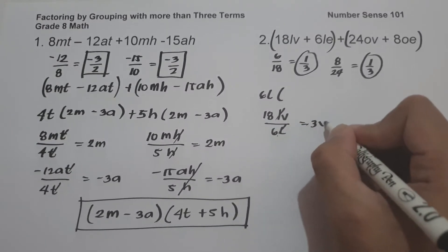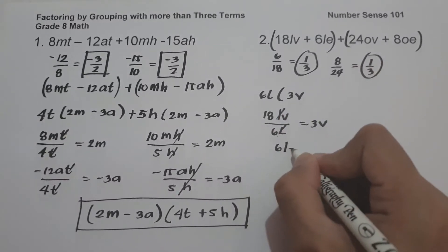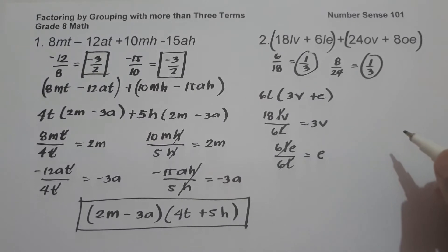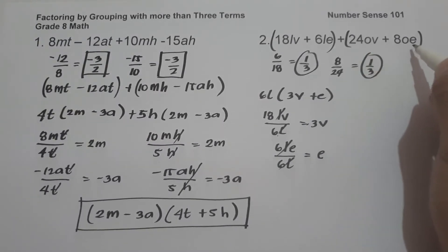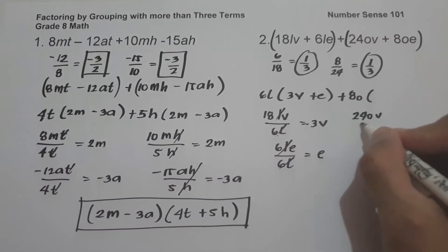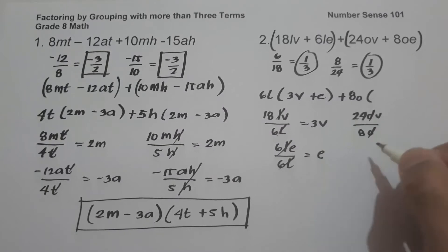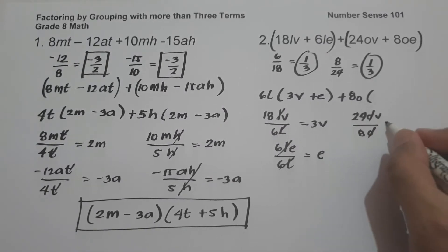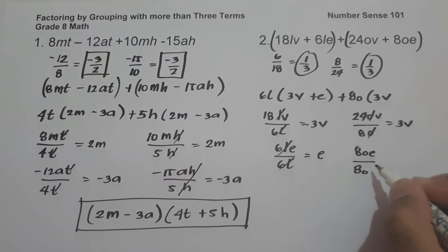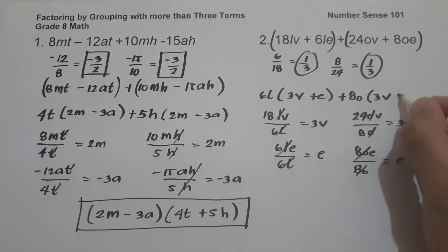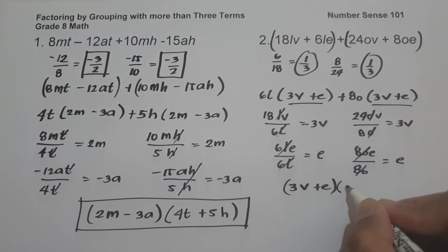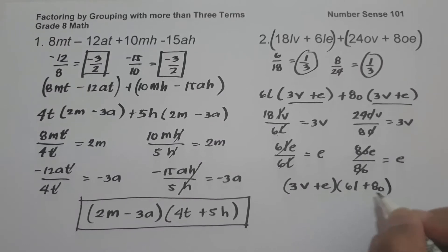Then 6le divided by 6l: cancel, giving e. The GCF of 24ov and 8oe is 8o. So 24ov divided by 8o: cancel o, 24v divided by 8 gives 3v. Then 8oe divided by 8o: cancel, giving e. Therefore, the answer is (3v plus e) times the quantity (6l plus 8o).